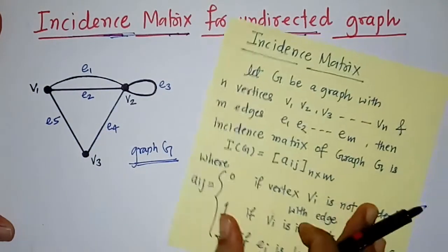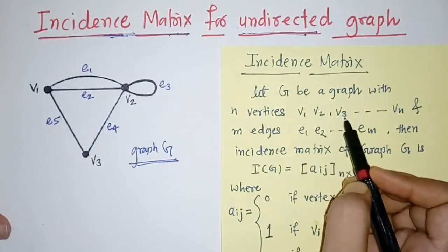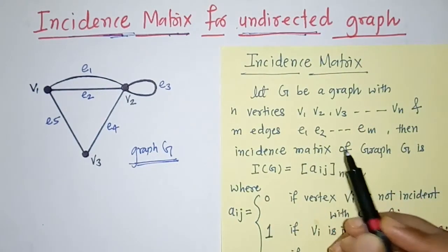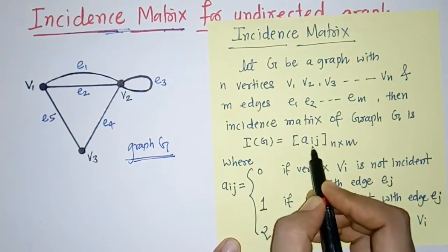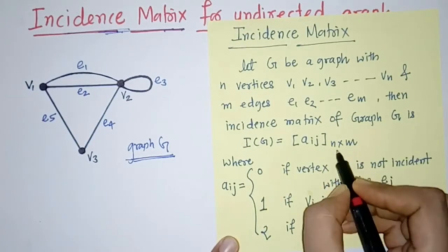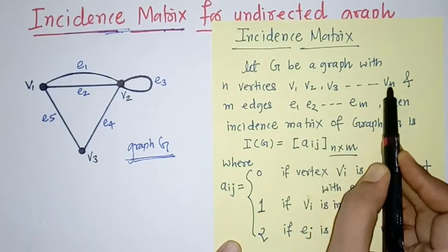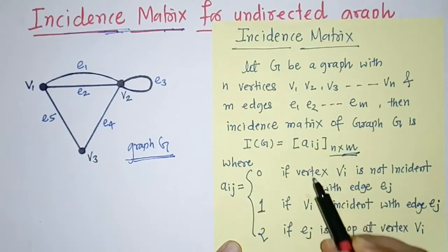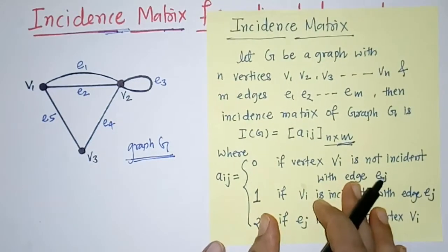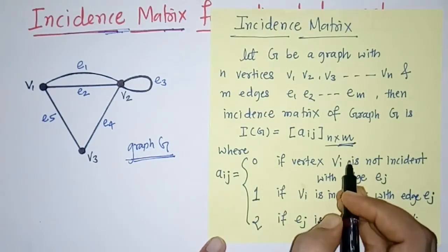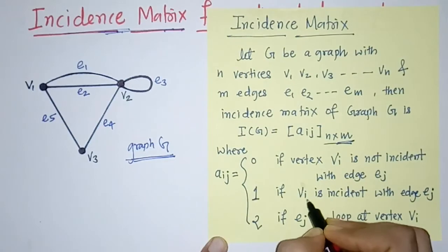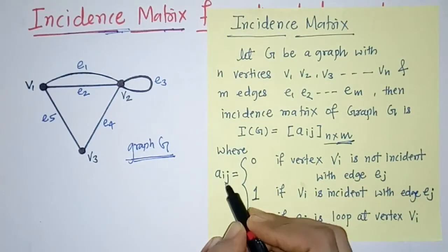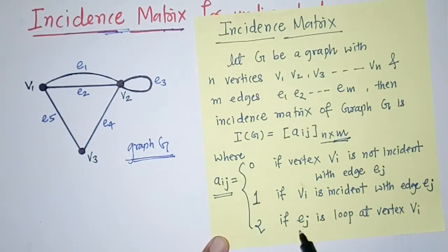If we have a graph G with n vertices v1, v2 up to vn and m edges e1, e2 up to em, then the incidence matrix of graph G is an aij matrix of order n by m, where n is the number of vertices and m is the number of edges. The elements aij are zero, one, or two: aij is zero when vertex vi is not incident with any edge; aij is one when vertex vi is incident with edge ej; and aij is two when ej is a loop at any vertex.